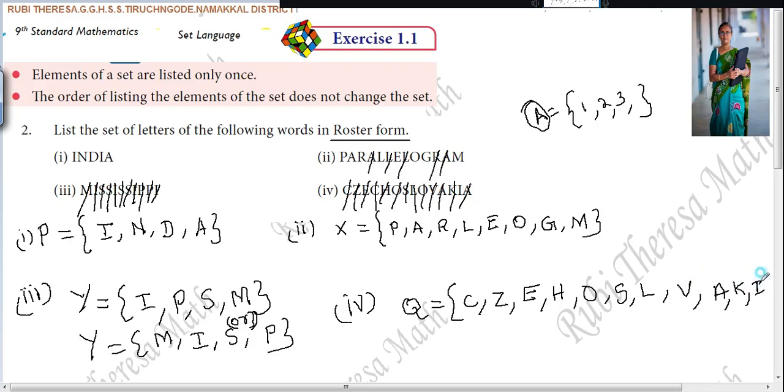Is it okay? So, elements of the set are listed only once. While you are writing in roster form, these two points you should remember always - changing the order of the elements, it does not affect the set. Order of listing the elements of the set does not change the set. These two points, please keep in mind and do it.